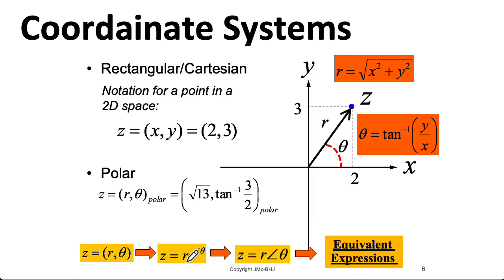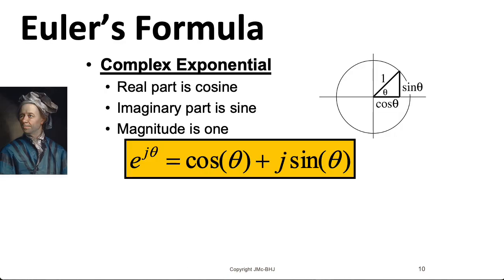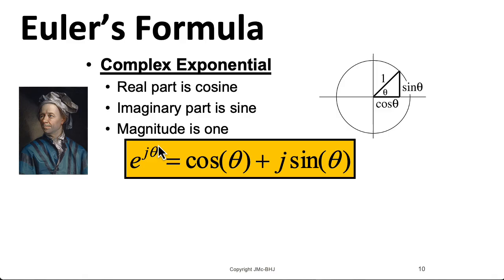Now, earlier I promised I would tell you what's going on with this e to the j theta business. This is where Euler's formula comes in. It says that e to the j theta equals cosine theta plus j sine theta. This looks a little weird at first glance. The most common proof you'll see probably involves Taylor series expansions of these quantities, but there's other ways to prove it. I will include some links to videos that talk about different proofs in the description below.